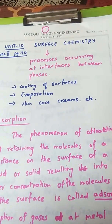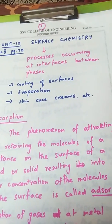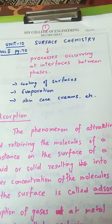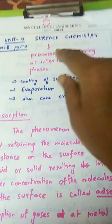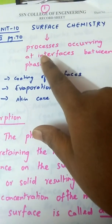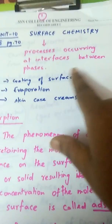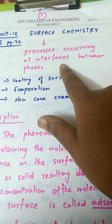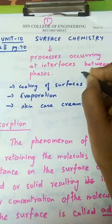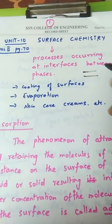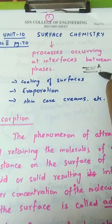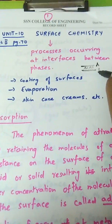Surface chemistry, as the name suggests, is a branch of chemistry that deals with surfaces. The surface may be a solid, liquid, or a gas. Surface chemistry deals with processes occurring at interfaces. An interface is the region where two phases come in contact — for example, where a solid meets a liquid.